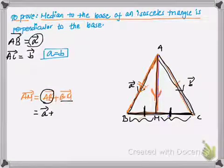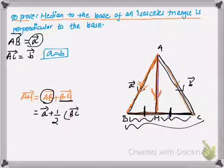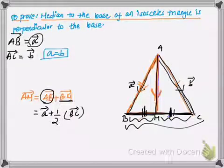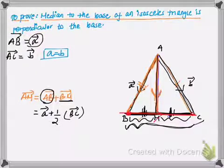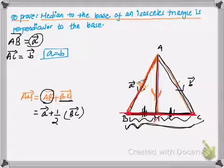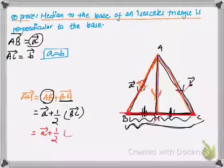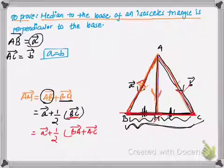For AB we have vector a, and for BM we can write it as half of BC, since BM equals MC. Now for side BC, moving from B to C is the same as moving from B to A and then A to C, so BC equals BA plus AC, giving us: vector AM equals a plus one half of (BA + AC).